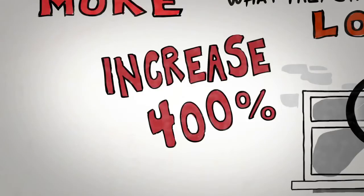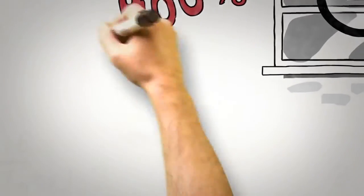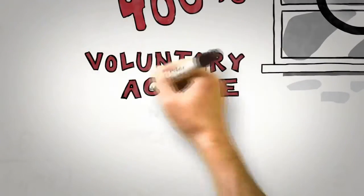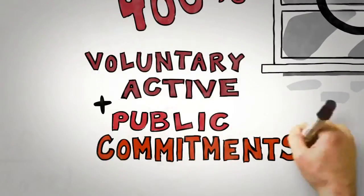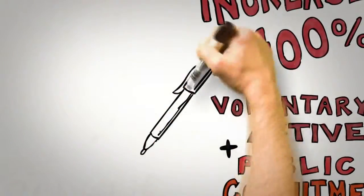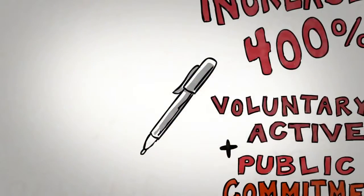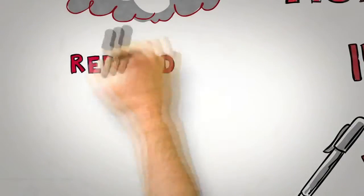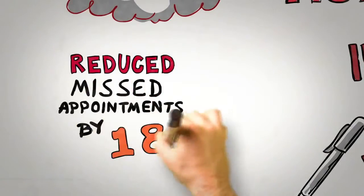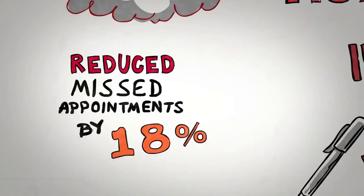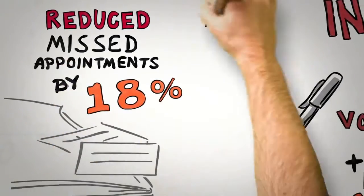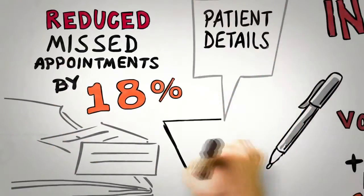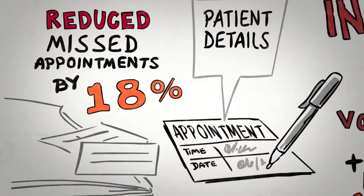So when seeking to influence using the consistency principle, the detective of influence looks for voluntary, active, and public commitments and ideally gets those commitments in writing. For example, one recent study reduced missed appointments at health centers by 18% simply by asking the patients rather than the staff to write down appointment details on the future appointment card.